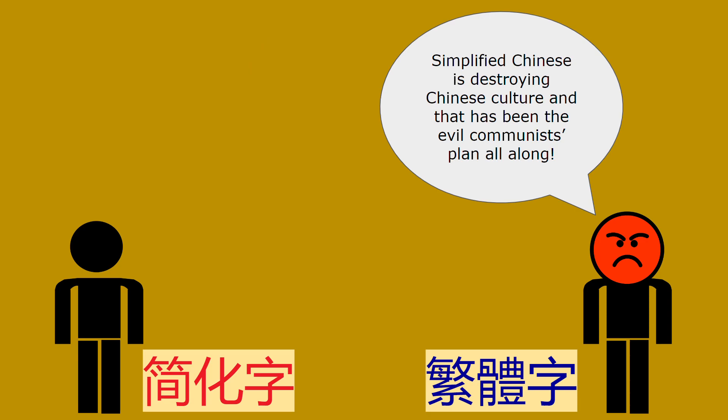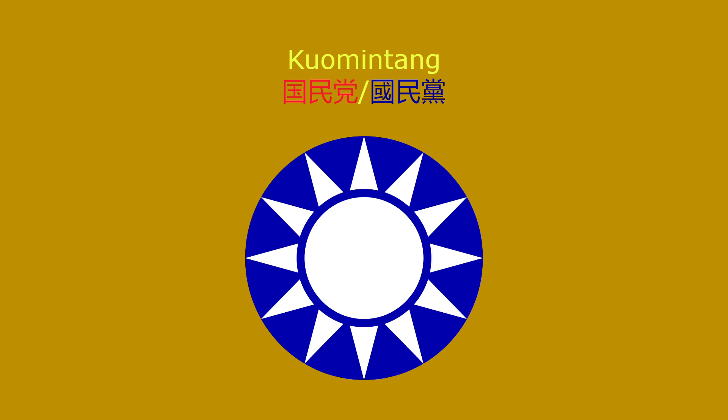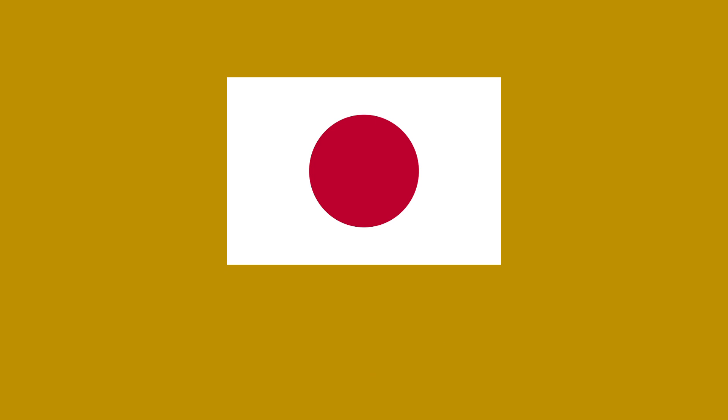Even in mainland China today, which uses mainly simplified characters, you can still see traditional Chinese used in the display of ancient artifacts in the Forbidden City. Some on the traditional side claim simplified Chinese is destroying culture and was the communists' plan all along — but contrary to that belief, the CCP wasn't the first to simplify Chinese characters. Even the Kuomintang had their own plans for simplification in the 1930s, though opposition within the party prevented it. The Japanese also simplified their own Chinese characters, known as kanji.